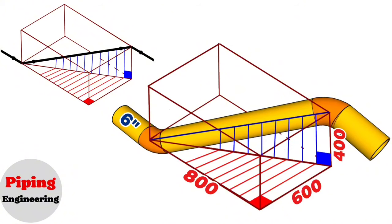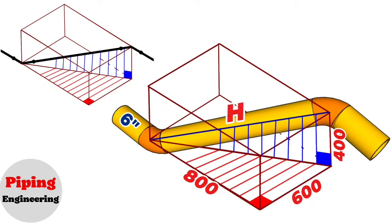Two right triangles are formed with dashed lines after the pipeline rises obliquely 400 millimeters and rotates 600 millimeters. We mark the vertical right-angle triangle with blue and the horizontal right-angle triangle with red. The hypotenuse of the blue triangle is the distance between the elbows, marked as big H, and the hypotenuse of the red triangle as small h.